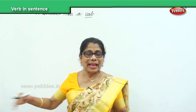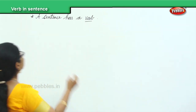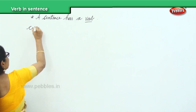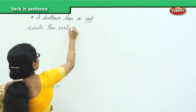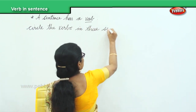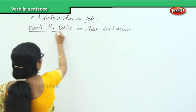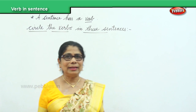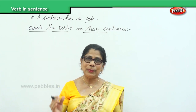Now I am going to give you a few sentences and we will together circle the verbs in these sentences. A sentence has a verb, so you must circle the verbs. You and I will do it together.